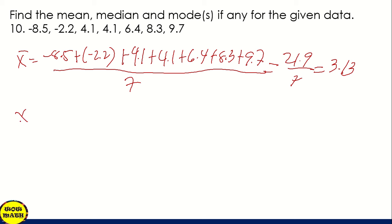And then the median. Of course, we need to arrange. This is already arranged. Since we have 7 values, copy lang natin: negative 8.5, negative 2.2, 4.1, 4.1, 6.4, 8.3, 9.7. Since we have odd numbers, isa lang yung middle value natin, and that is 4.1. So the answer here is 4.1.